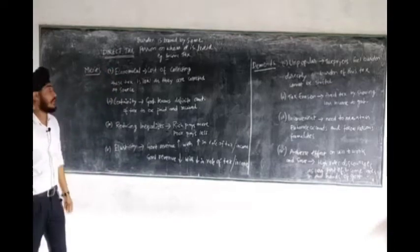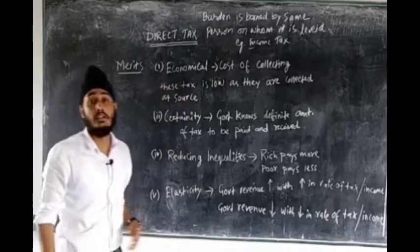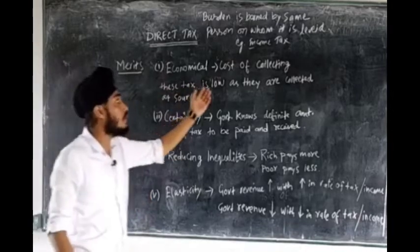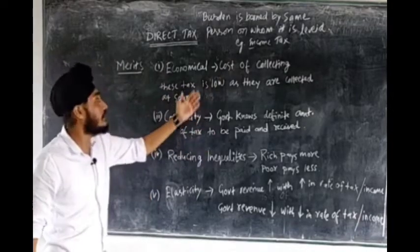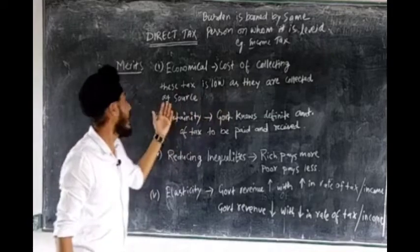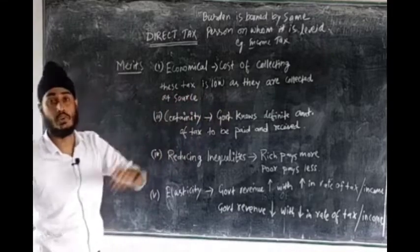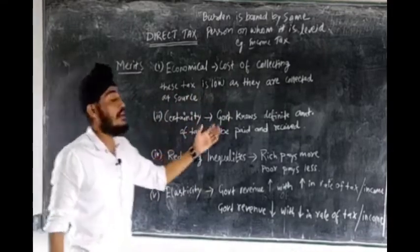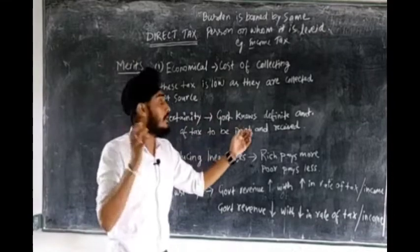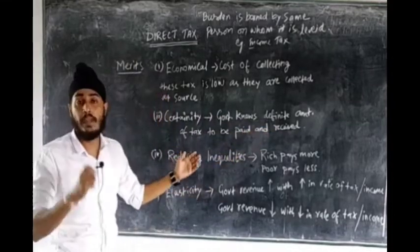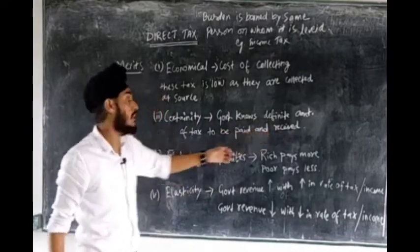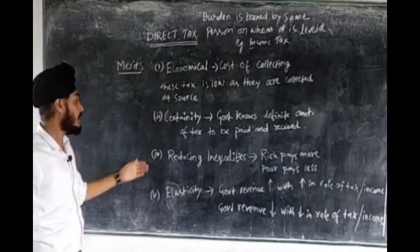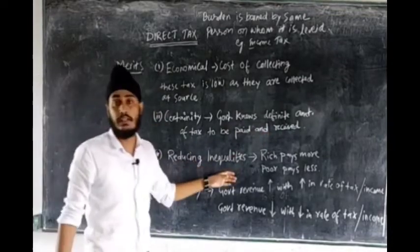Now let us see the merits of direct tax one by one. The first merit is economical — direct taxes are economical as the cost of collecting this tax is low, as they are collected at source. Number two is certainty — the government knows the definite amount of tax to be paid and received, that is the reason they have certainty.